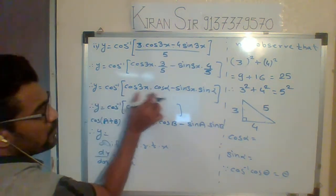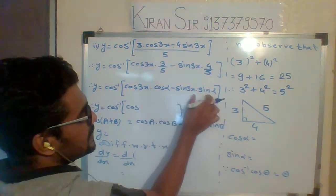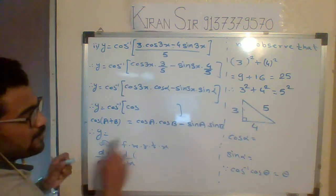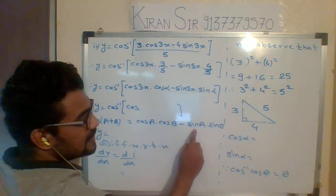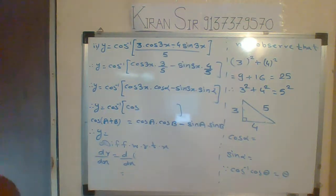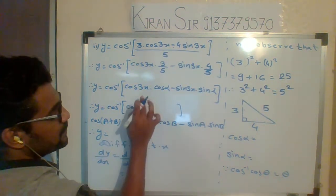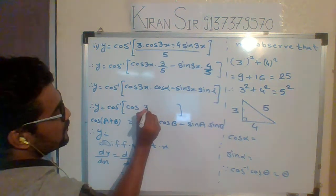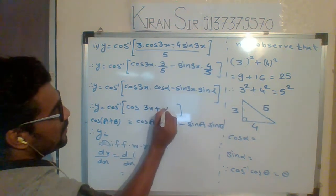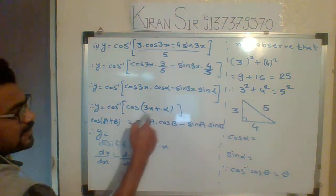I'm going to apply cos a cos b minus sin a sin b, which is cos (a plus b). Then a is 3x and b is α. Then cos inverse of cos θ is θ. What is θ here? 3x plus α.